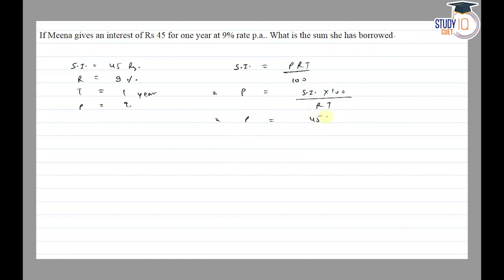P = SI × 100/RT. SI we have is 45 × 100 upon R which is 9 and time of one year. 9 and 45 cancel, giving 5 times. So P = 5 × 100 = 500 rupees.